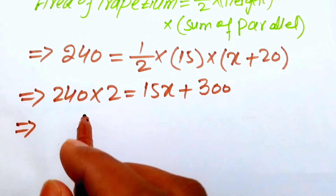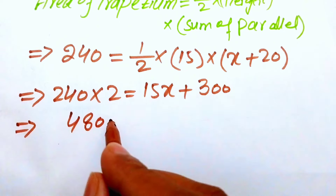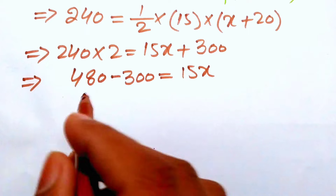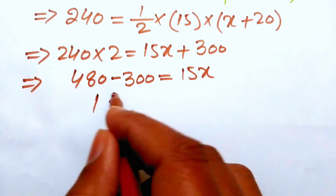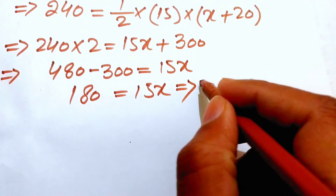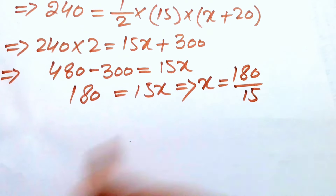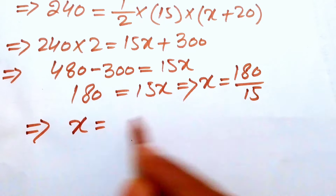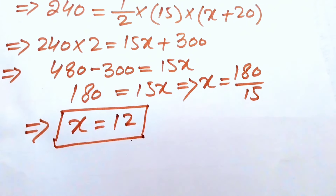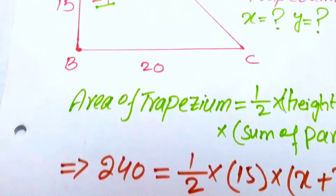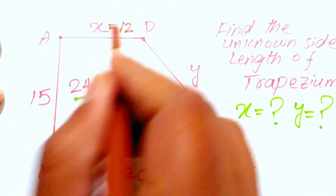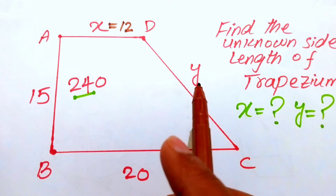We get 480 = 15x + 300. Moving 300 to the left side: 480 − 300 = 15x, which gives 180 = 15x. Dividing both sides by 15, we get x = 180/15 = 12. So the first unknown side length of the trapezoid is x = 12 meters.